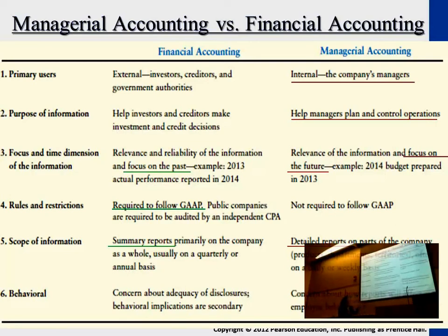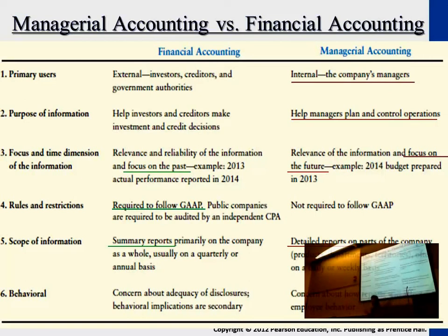So these are the main differences. The key categories you need to know are: user differences, the focus, the purpose of these two categories in accounting, rules and restrictions, and scope of information. One produces a comprehensive report; the other produces detailed reports on certain business lines upon manager's request.